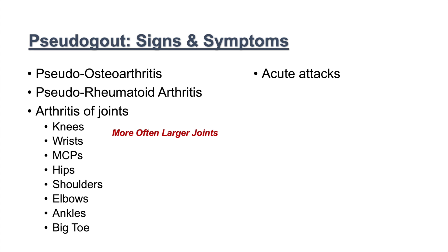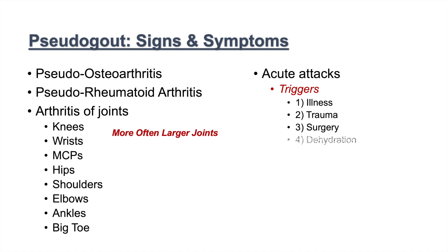Pseudogout can undergo acute attacks, and there are specific triggers for these. Some triggers include illness, trauma, surgery, and dehydration. Being dehydrated can actually increase the concentrations of calcium pyrophosphate crystals, leading to increased deposition of these crystals. The other triggers can have a similar effect.